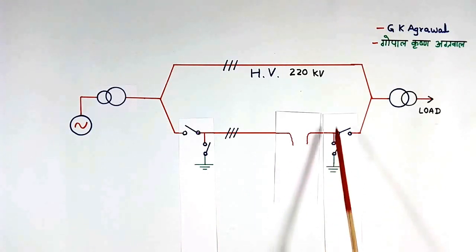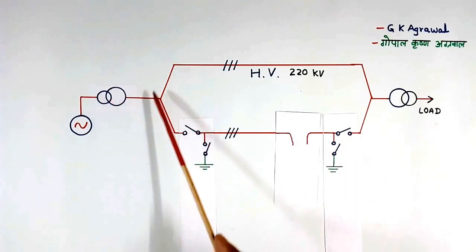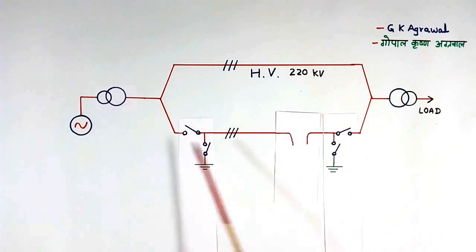After completing the repair of this line, we will open this isolator and close the breaker. And power will start flowing from both the transmission lines because we have repaired this fault.